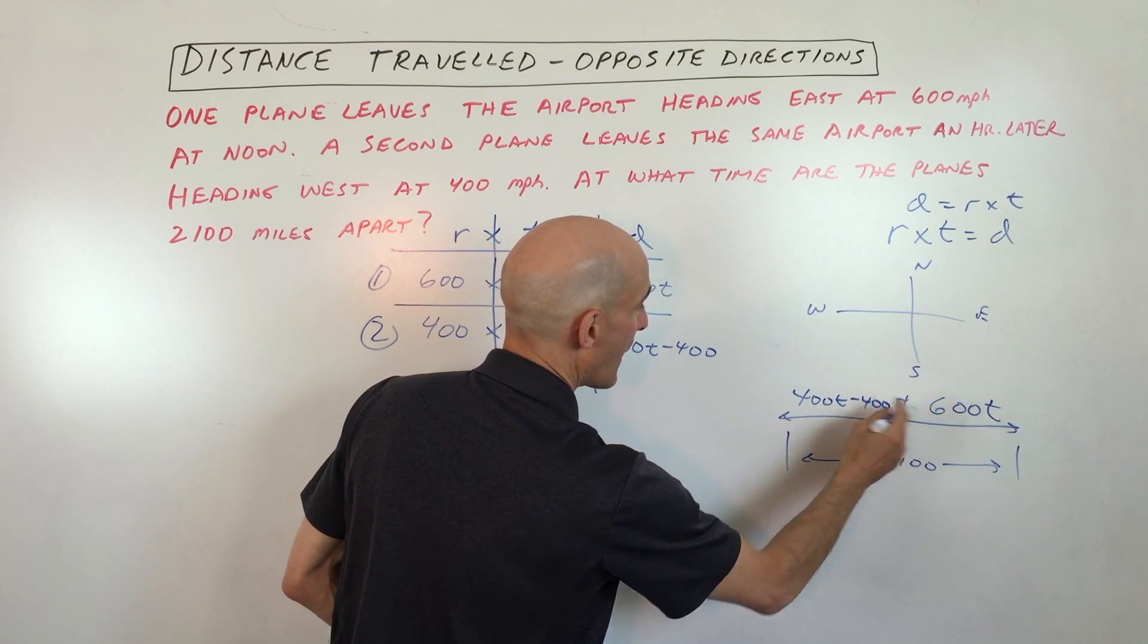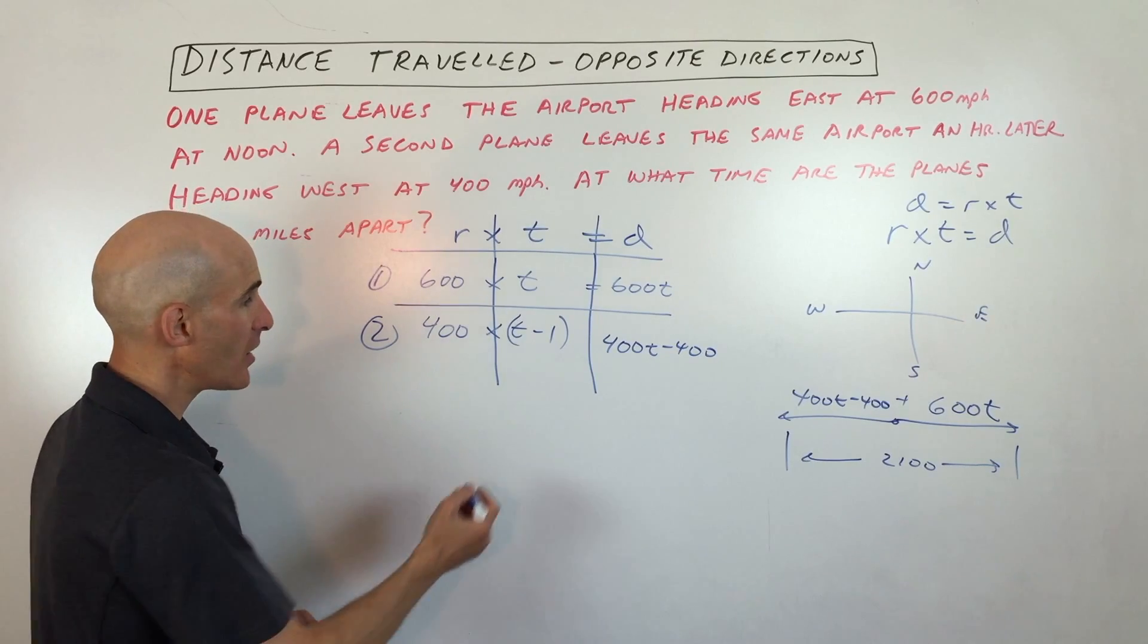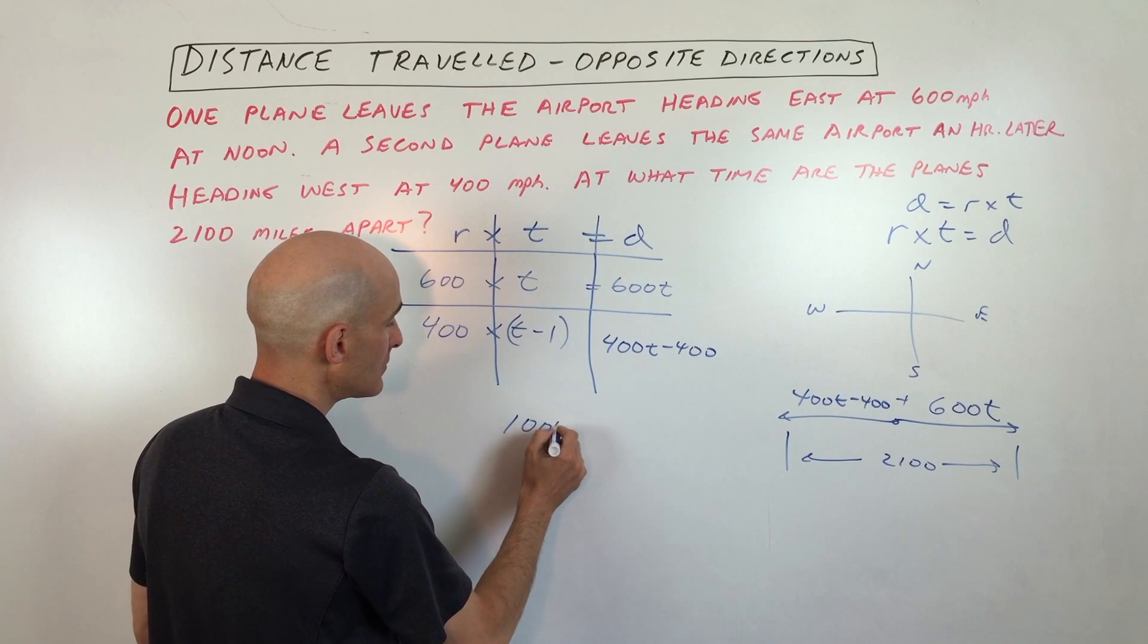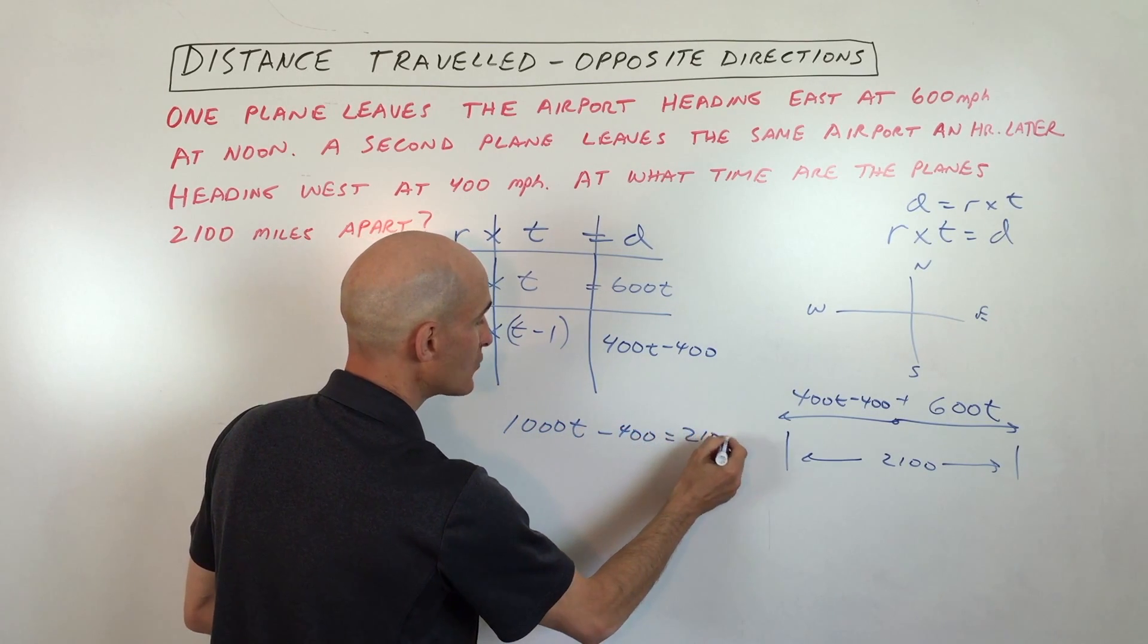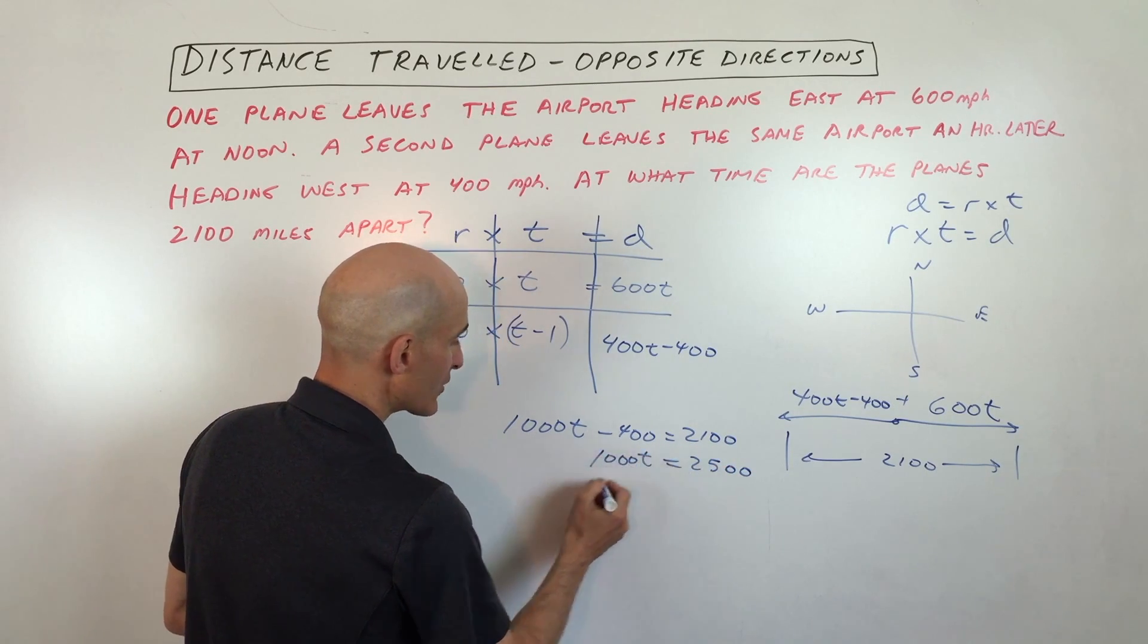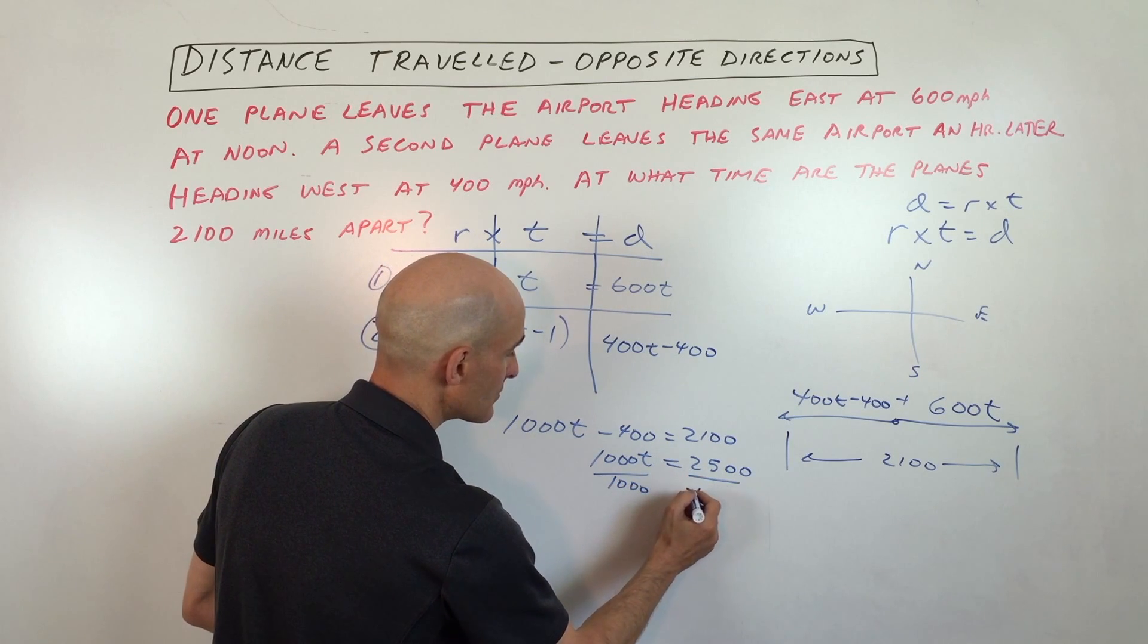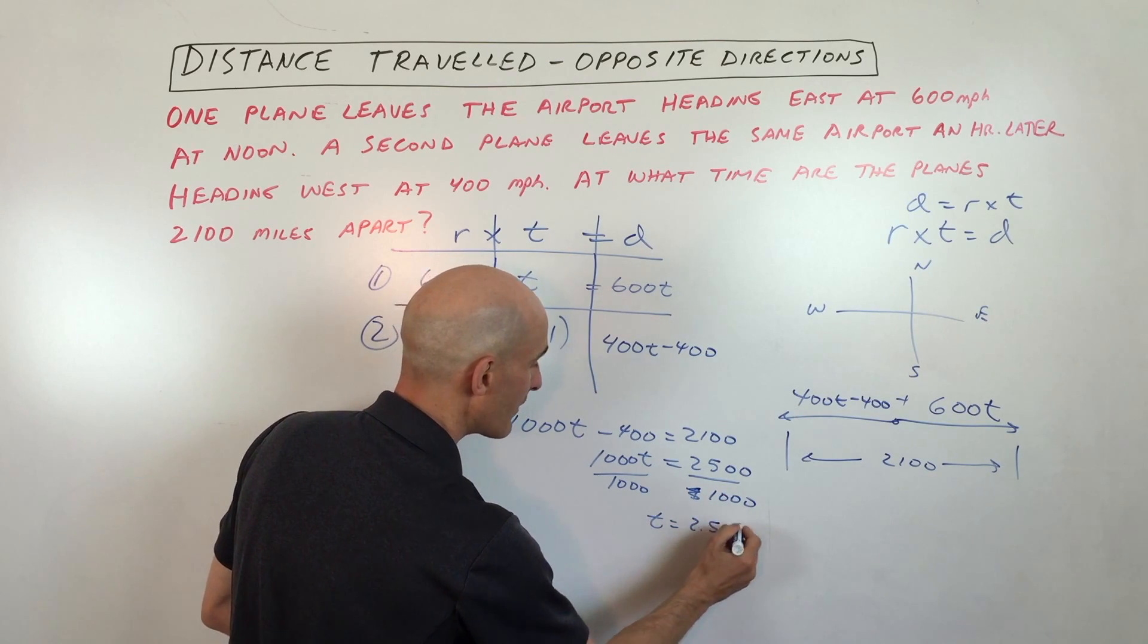Now if you add these two distances together, you get the total distance of 2,100. So that's what we're going to do now. If I add these together, I get 1,000t minus 400 equals 2,100. I'm going to add the 400 to the other side, so we're just doing some basic math here, and we're going to divide by 1,000, both sides, and so that gives us a time of 2.5 hours, right?